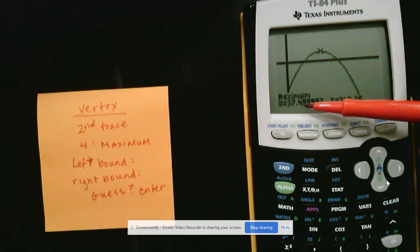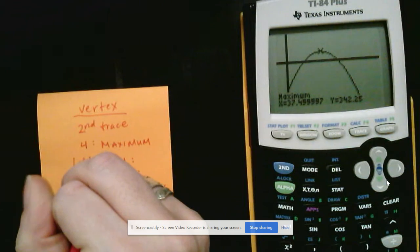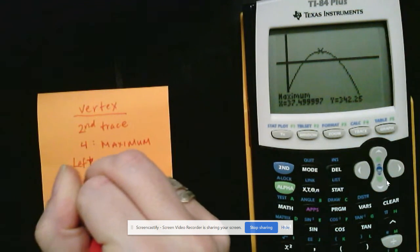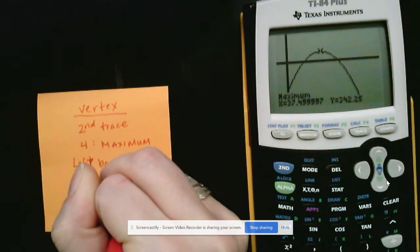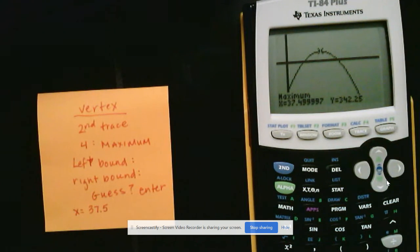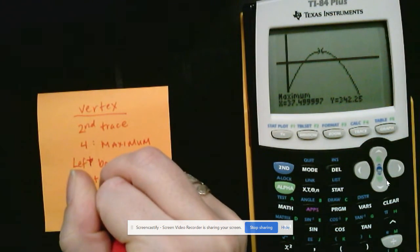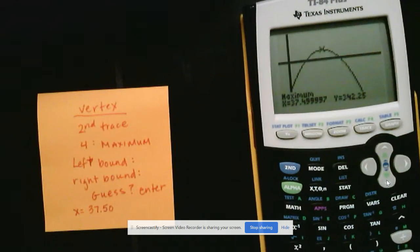So this nine in the thousandths place would tell me to round this one up, which automatically bumps this up to what looks like a 50. So my X value would be 37.5 or 0.50 if you prefer. You want to keep it consistent and put everything out to the hundredths.